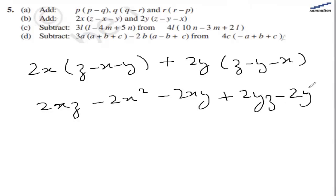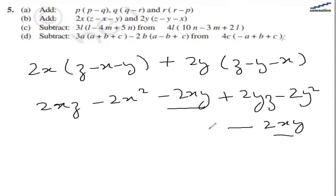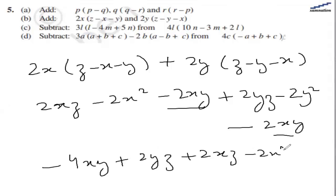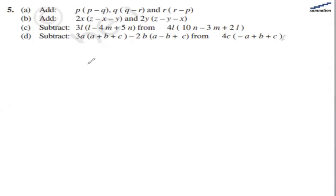Continuing: minus 2y² minus 2xy. The like terms are minus 2xy and minus 2xy, so combining them gives minus 4xy. All other terms are unique, so the final result is 2yz plus 2xz minus 2x² minus 2y² minus 4xy.